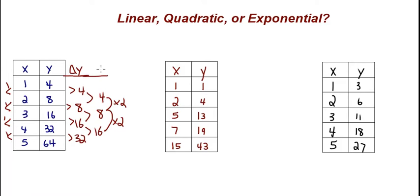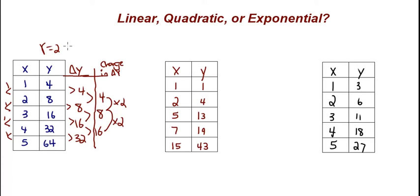Given a table of values, we look at the change in delta y. If you look at those values — four, eight, 16 — we're not adding the same amount each time; we're multiplying. From four to eight is times two, and from eight to 16 is times two again. That consistent multiplication means it's exponential, not quadratic and not linear. Every time we're multiplying by the same ratio — in this case, two. We'll save writing the actual equations for a separate video.